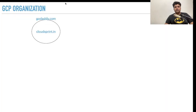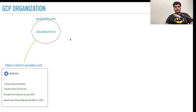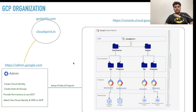Whenever you go to a company or start a cloud migration, every company has their own domain. For this example we have a domain booked with GoDaddy which is cloudsprintdotin, and we will be working with this domain for all our labs. The second thing is Google Workspace Admin, which helps us configure cloud identity, create users, create groups for enterprise users, provide permissions to use GCP, and attach cloud identity to the org and GCP.